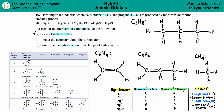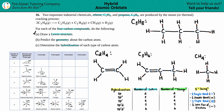Step one is done — all four Lewis structures are drawn. Now for step B, we predict the geometry about each carbon atom. Starting with C₃H₈: all three carbons are the same in that they each have four single bonds. It doesn't matter which carbon we analyze — the geometry will be the same throughout.